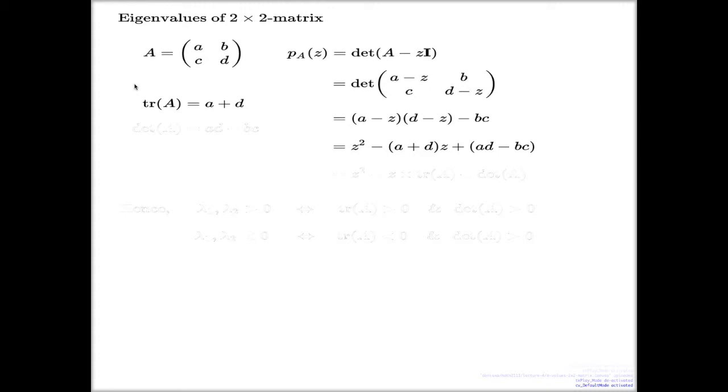On the other hand, from Vieta's theorem, from elementary algebra, we know that the sum of the solutions of the quadratic equation equal the sign next to the linear term with the opposite sign. So the sum of the eigenvalues, which are the solutions to this equation, they equal to this bracket, which is the trace.